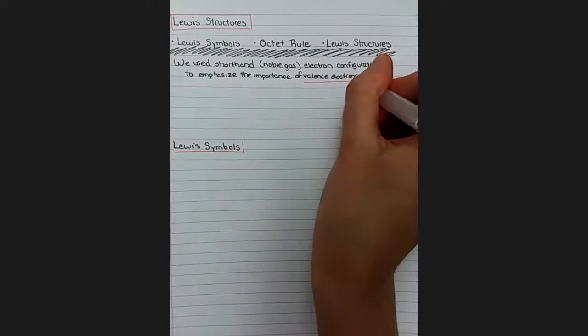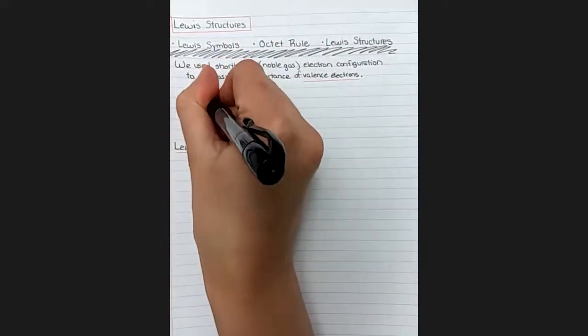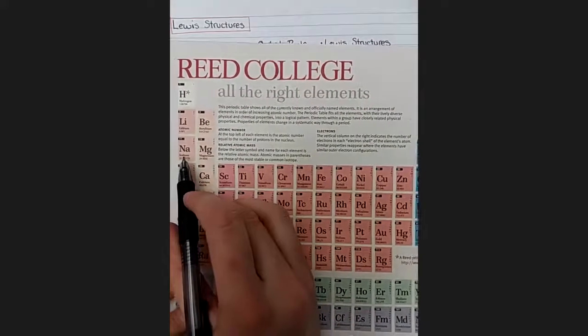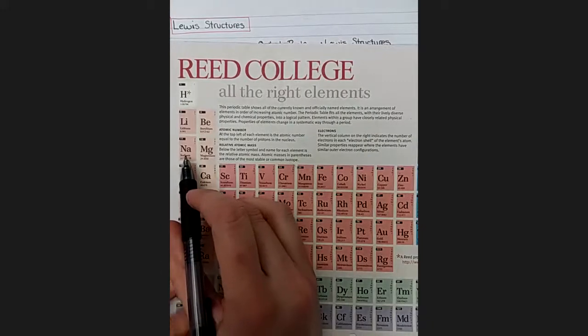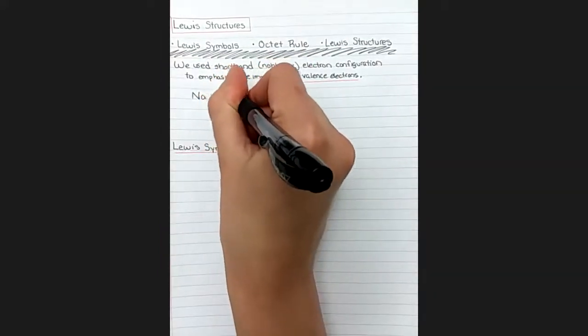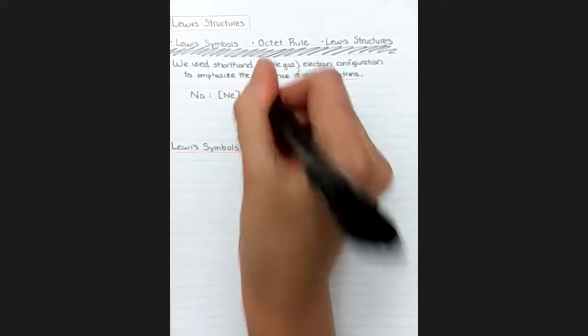So valence electrons is what we are going to be all about from this point on. So for example, sodium is here, beginning of the third row of the periodic table. The previous noble gas was neon at the end of the second row. So we emphasize its one valence electron by writing neon 3s1.